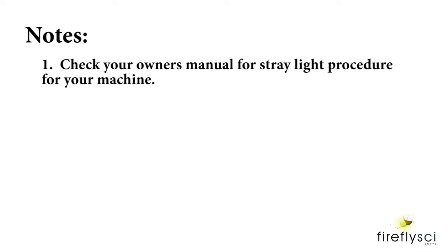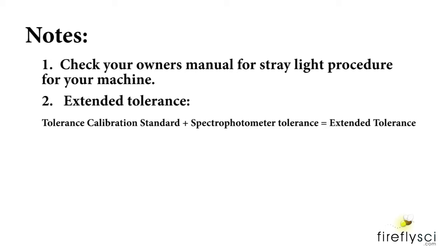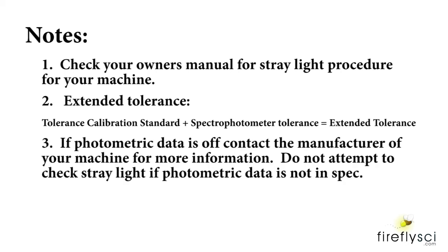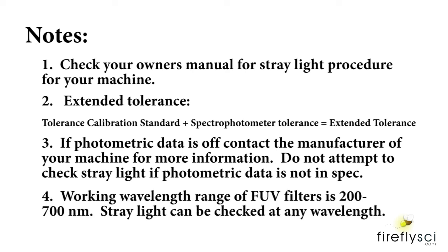Just a few quick notes. Number one is always check your owner's manual for the stray light process for your machine. Number two is always make sure you account for the extended tolerance which is the tolerance of the calibration standard plus the spectrometer tolerance in this case for stray light. Add those two together and you get the extended tolerance. If the photometric data is off, contact the manufacturer of your machine for more information. Do not attempt to check stray light if the photometric data is not in spec. The working wavelength range of the FUV filters is 200 to 700 nanometers. Stray light can be checked at any wavelength. It's important when you do a stray light scan to check the photometric accuracy and the stray light accuracy at the same wavelength and you don't switch wavelengths in between scans.